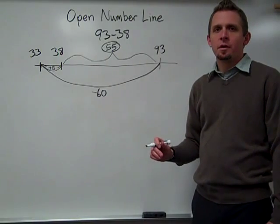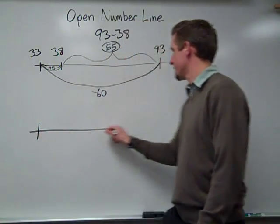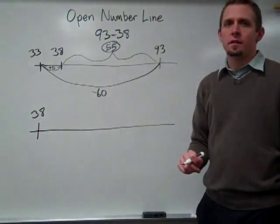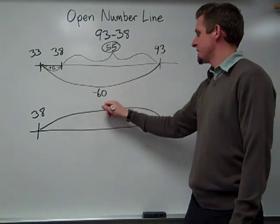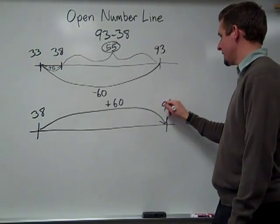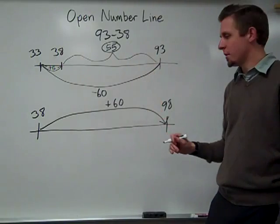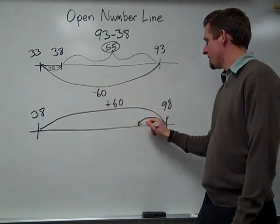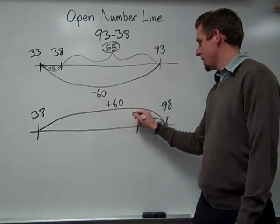Using an open number line, I could also go up. So maybe I start at the 38 and then I could add 60. That would take me to 98. That was too far. We only have to go to 93. So then I go back 5, 98 minus 5 to 93.